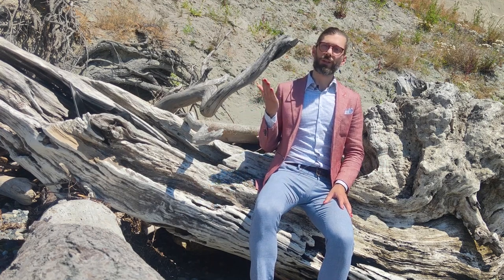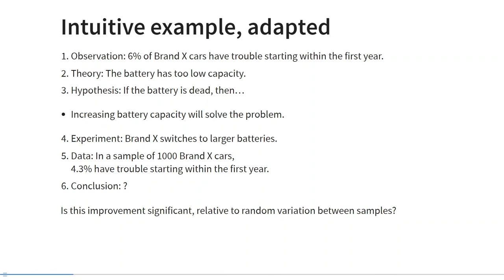In statistical testing, instead of using a single piece of evidence, we use probability calculus. This allows us to test hypotheses in the presence of uncertainty. Let's adapt our intuitive example. Let's say we have the observation that 6% of cars from an unnamed brand have trouble starting within the first year. The manager at the factory may establish a theory that the battery of these cars has too low a capacity. They derive hypotheses consistent with the theory and state that if the battery has too low capacity, then increasing the capacity will solve the problem.